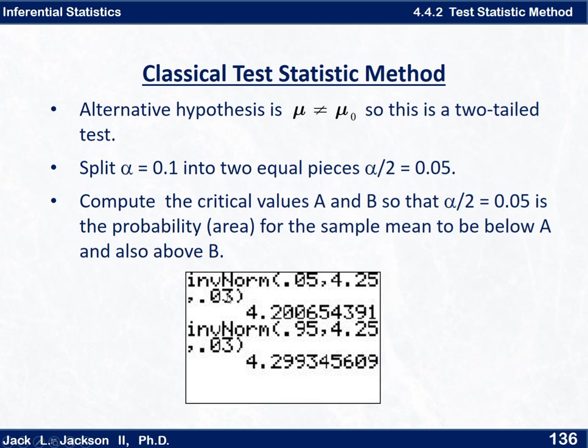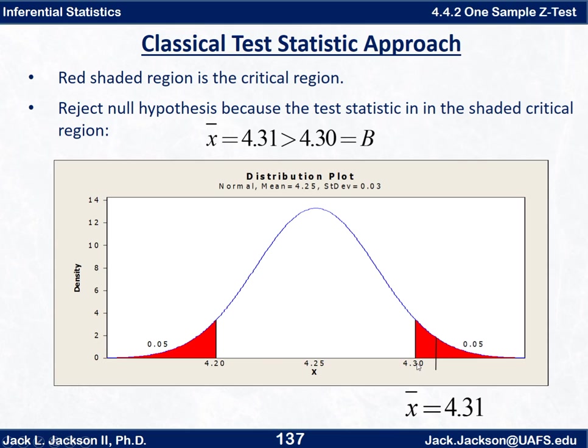If we do inverse norm of 0.05 with that mean and standard deviation—remember this is the standard deviation of the sample means, 0.03, not the 0.12 for the population of individuals—we get this number here. Likewise we can do an inverse norm of 0.95, that's 0.05 to the right, 0.95 to the left, and same mean and standard deviation, and we get this. So 4.2 and 4.299. So that's about 4.20 and 4.30 to two decimal places. And so that identifies these red regions here. Each of these probabilities is illustrated by an area. The area over here to the left is 0.05 or 5 percent, and that's the probability that we would get an x-bar value less than 4.20. And to the right is 0.05, that area or that probability that we would get an x-bar value greater than 4.30. And we got an x-bar out here.